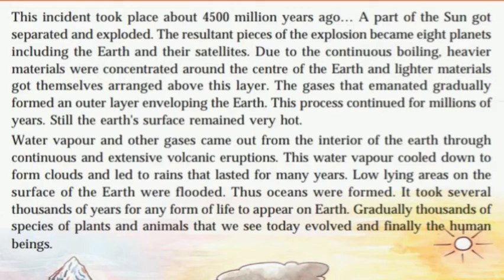Water vapour and other gases came out from the interior of the earth through continuous and extensive volcanic eruptions. This water vapour cooled down to form clouds and led to rains that lasted for many years. Low-lying areas on the surface of the earth were flooded and the oceans were formed. It took several thousand years for any form of life to appear on earth. Gradually thousands of species of plants and animals that we see today evolved, and finally human beings.